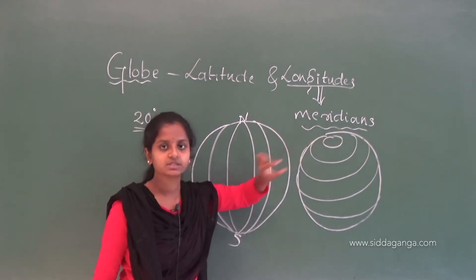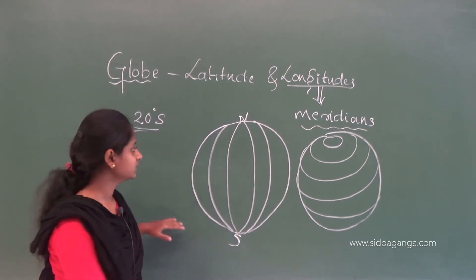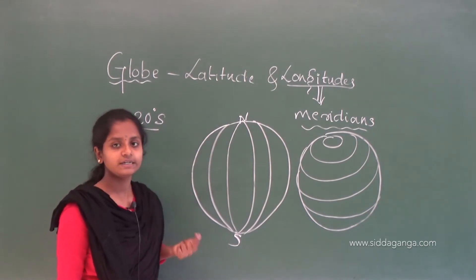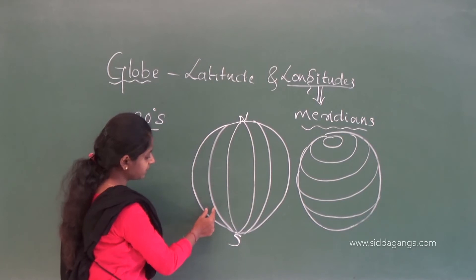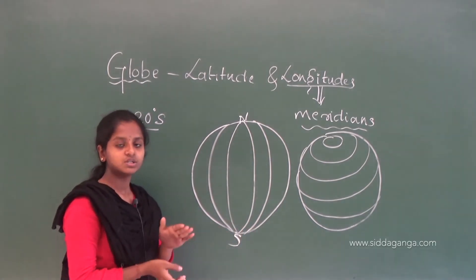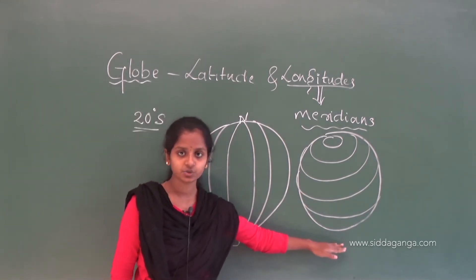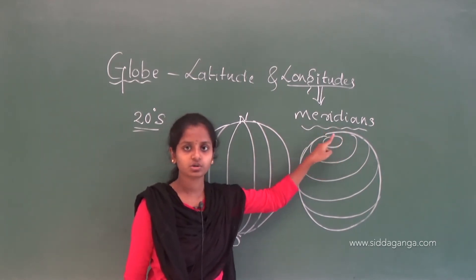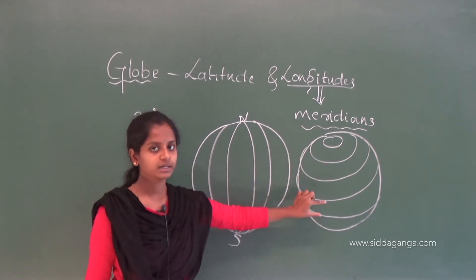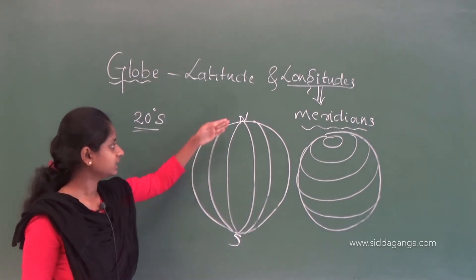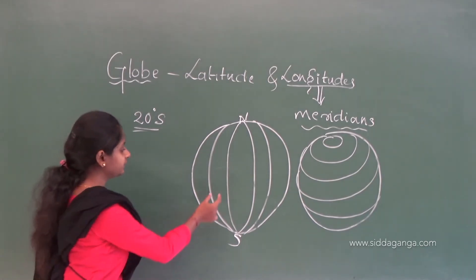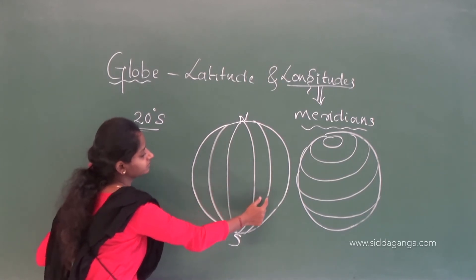Here, the length of the meridians will not differ — it remains the same. But the distance between the meridians will differ. Near the equator the distance is large, and it decreases towards the poles. So in latitudes, the length differs but distance stays the same; in meridians, the length stays the same but the distance differs.